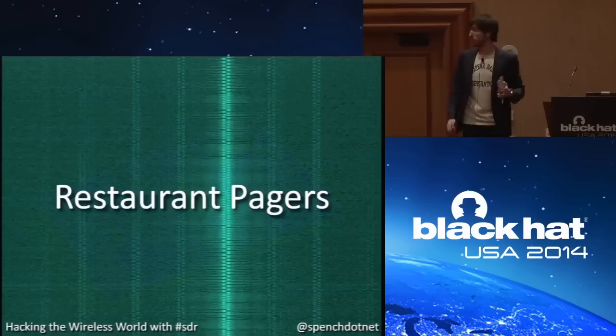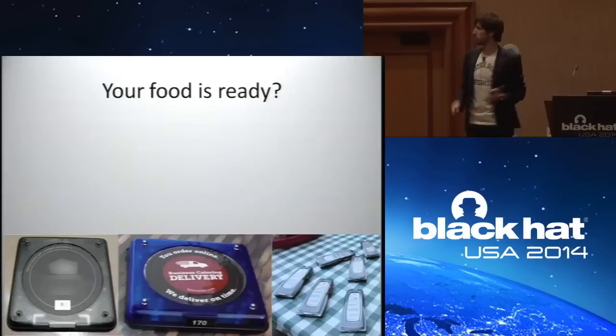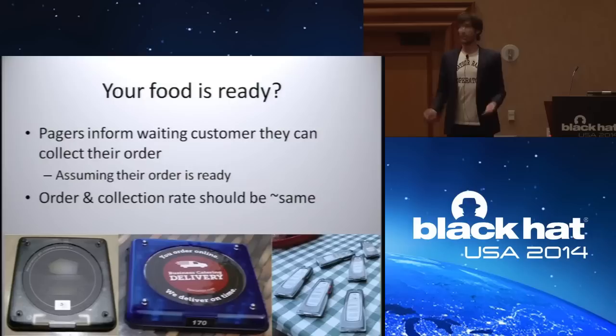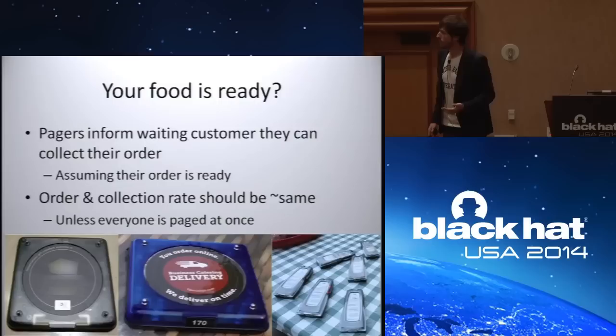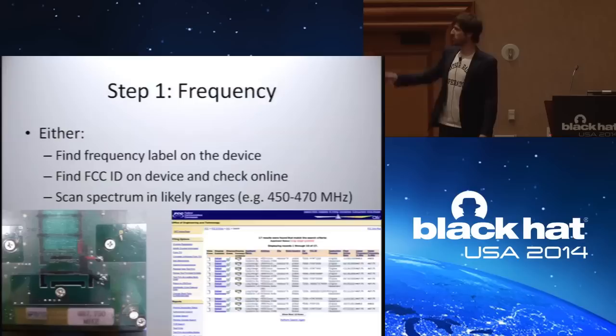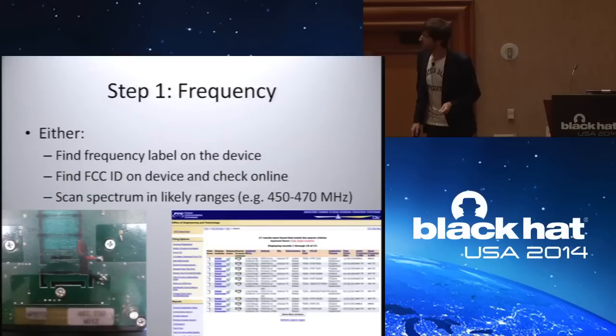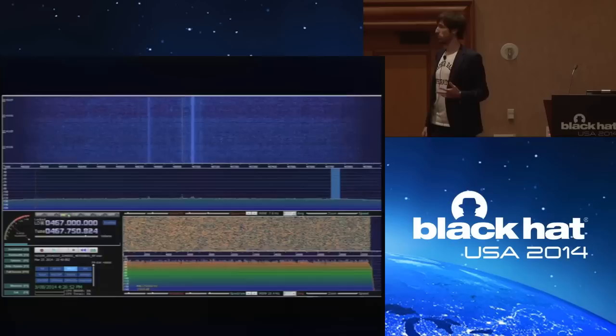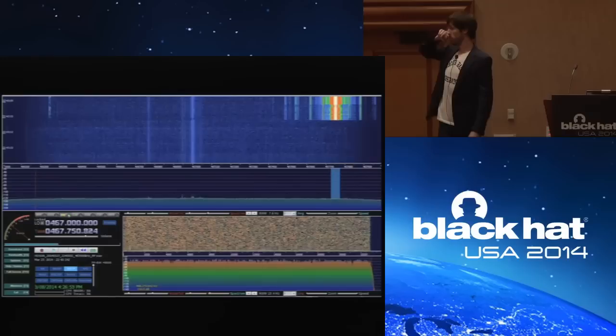First, restaurant pagers. When your food is ready, you assume throughput at the kitchen is roughly the same as the audit rate. But what happens if everybody gets paged at once? To figure out what frequency they operate on, you can find it on the device label, look up the FCC ID on the FCC database, or use a software-defined radio as a spectrum analyzer and scan the bands until you find your local pager. The signal is quite strong because it's nearby.